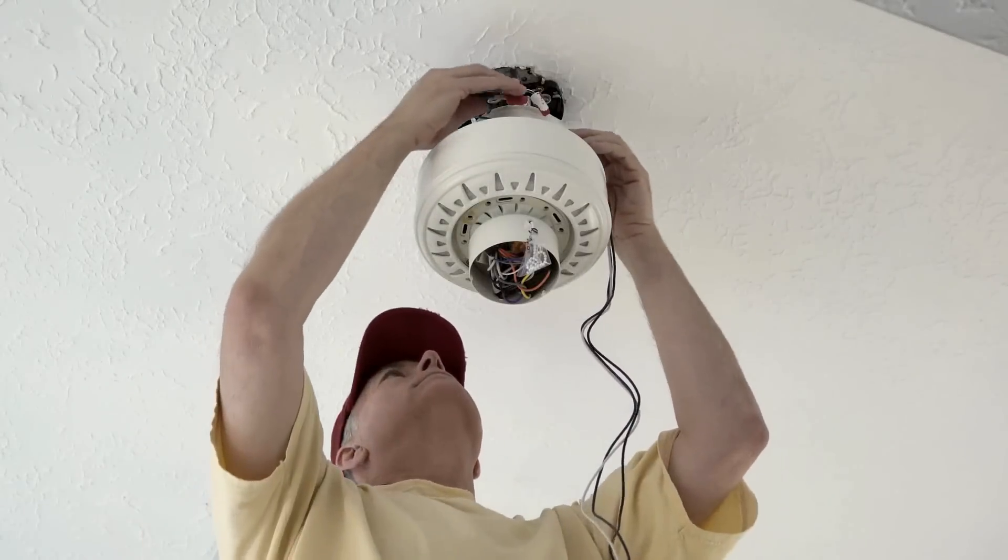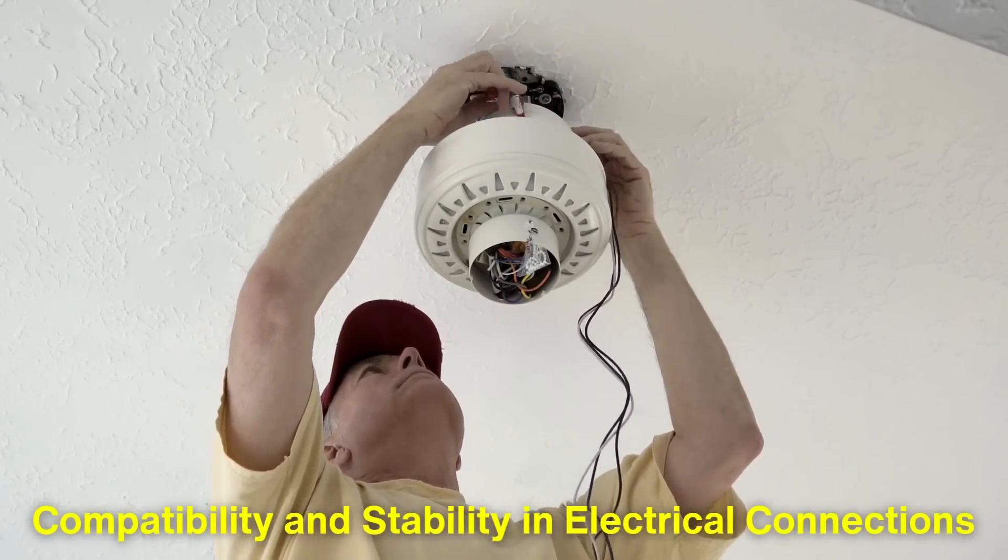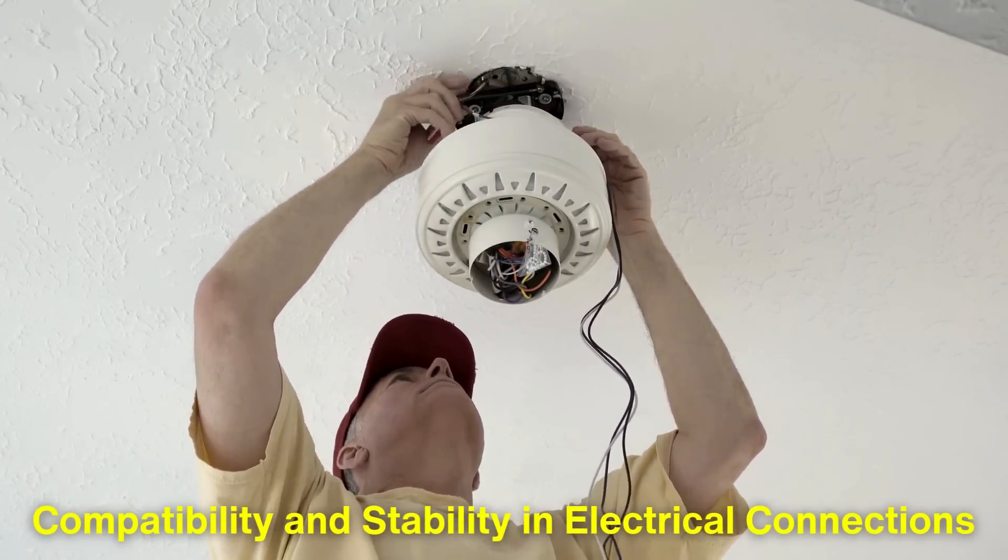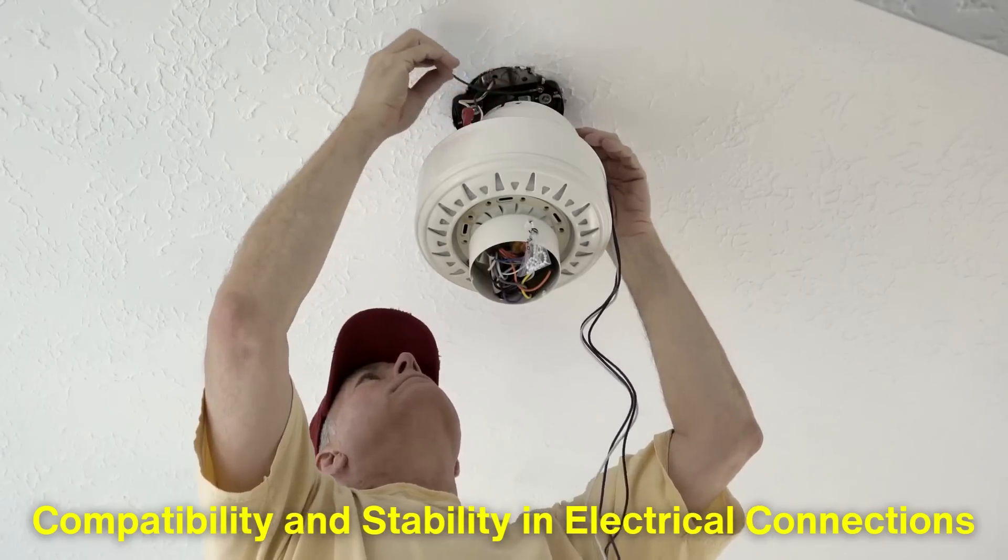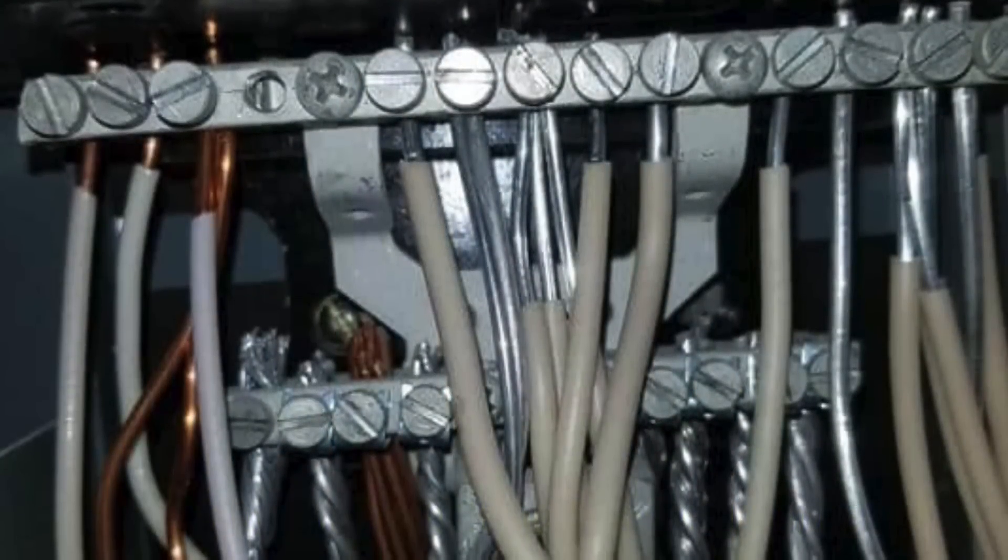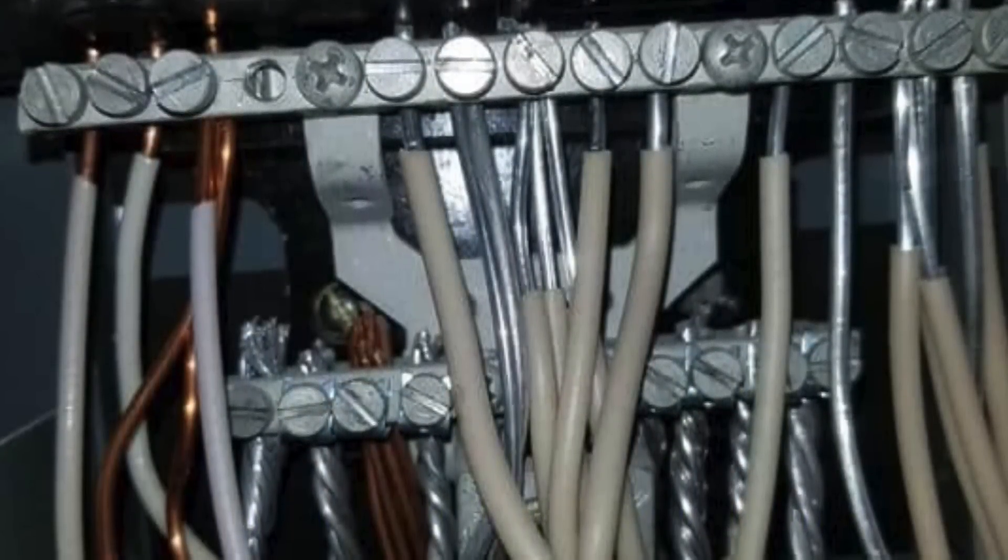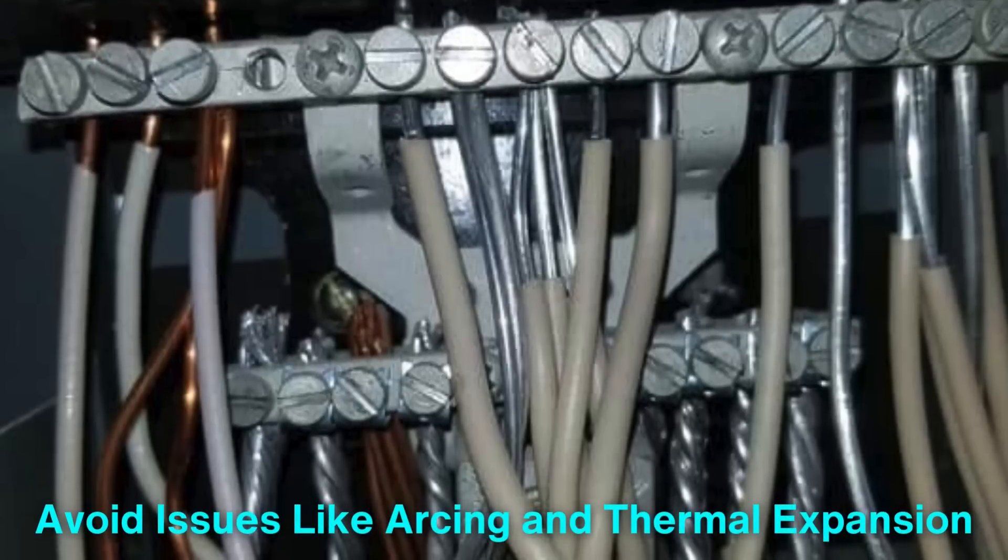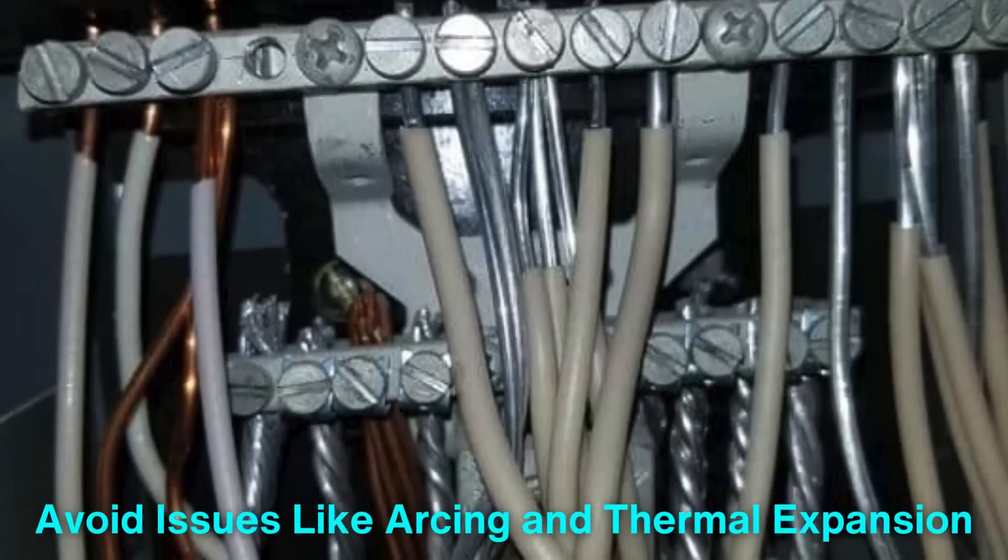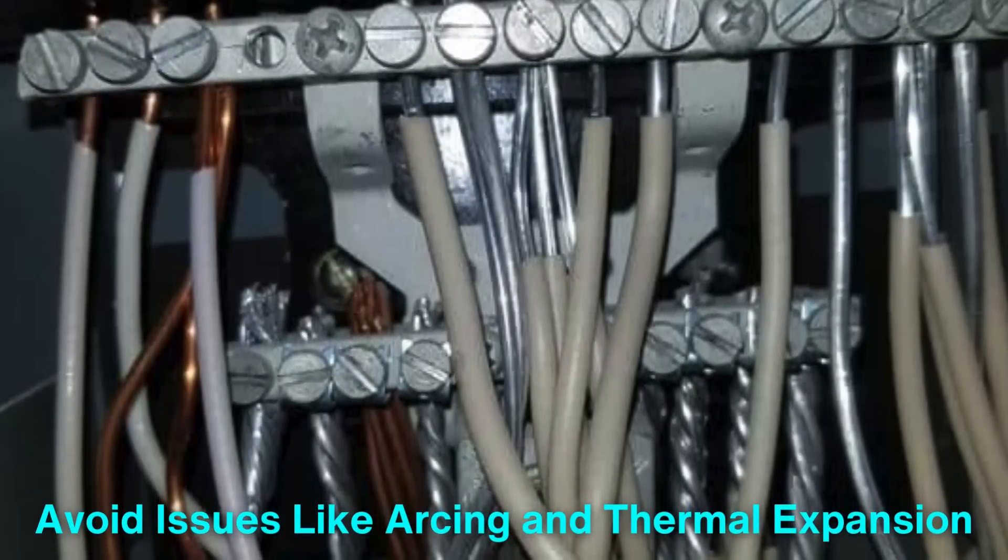Copper also boasts a level of compatibility and stability in electrical connections that aluminum wiring struggles to match. For instance, aluminum connections often need specialized fittings to avoid issues like arcing and thermal expansion, adding extra complexity and cost to installations.